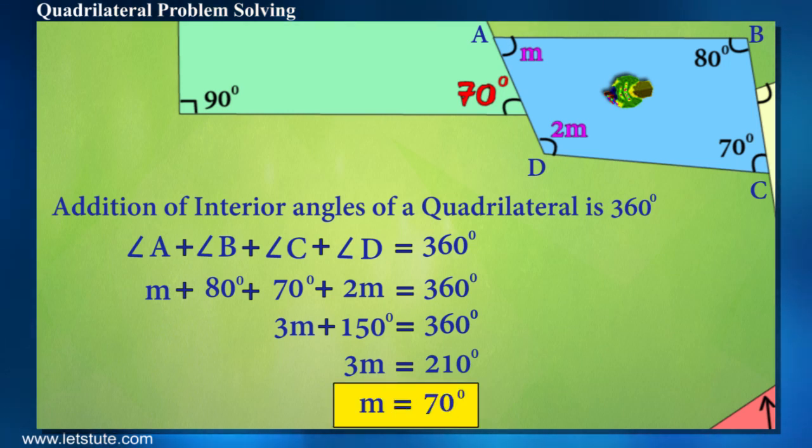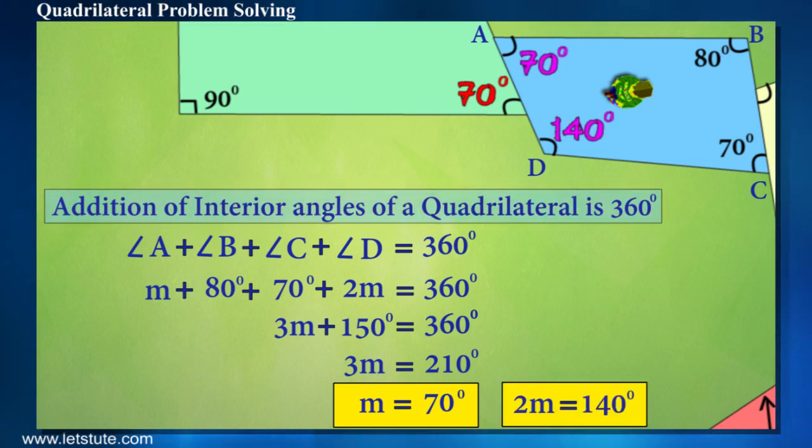And therefore, missing angles are 70 degrees and 140 degrees respectively. A single property had helped him in crossing the two blocks.